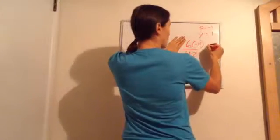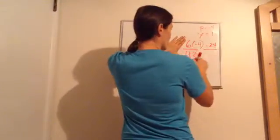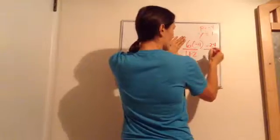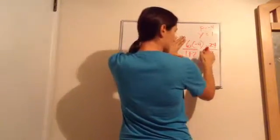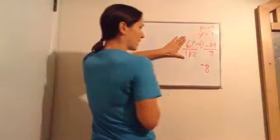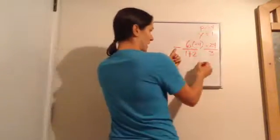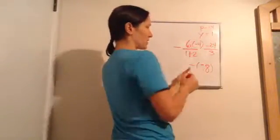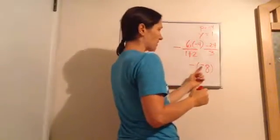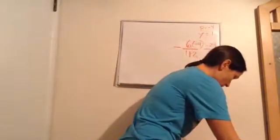6 times negative 4 is negative 24. 1 plus 2 is 3. 24 divided by 3 is 8. And since I have a negative right there, it's negative. But look at this one on the outside — that would be negative negative. So it's the opposite of negative 8, which would be just positive 8.